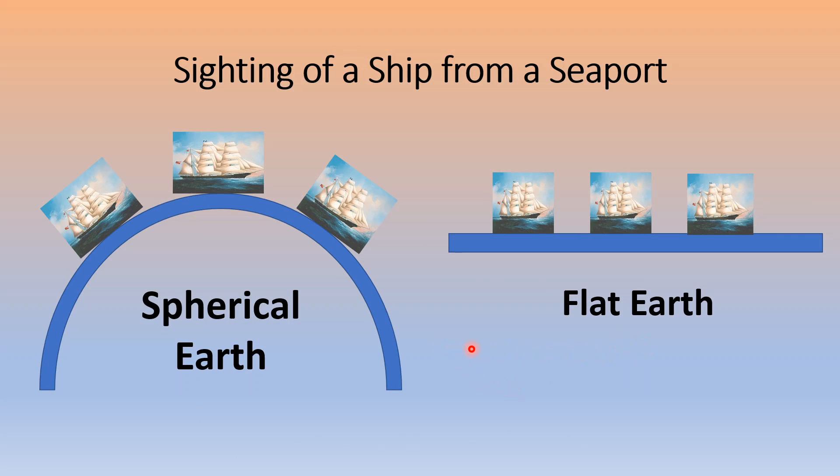Now if we are standing at a seaport and we see a ship approaching, we cannot see the entire ship at one go. We first see the mast of the ship, that is the highest part. And later on, we are able to see the ship's entire features. Now why is this possible? This is possible because the Earth is spherical in shape. Had the Earth been flat, then from the port, we could have seen the entire ship.